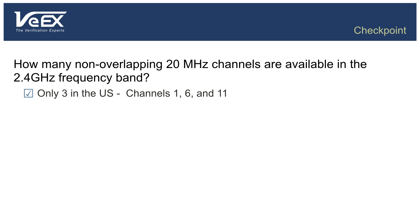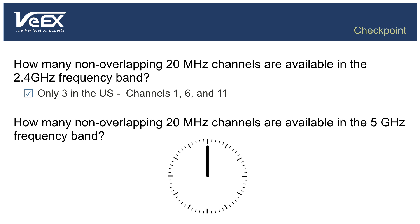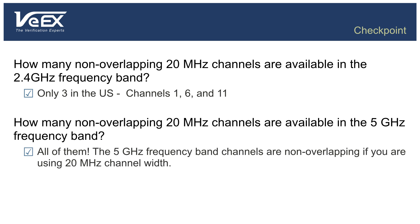How many non-overlapping 20 MHz channels are available in the 5 GHz frequency band? All the 5 GHz channels are non-overlapping because they're designed to be 20 MHz wide. But if you start using 40, 80, or 160 MHz channel bonding to increase your data rate, you may have to start worrying about overlapping. If you want to be a good neighbor, make sure to set your access point to channels 1, 6, or 11 in the 2.4 GHz band, or move on up to the 5 GHz frequency band if you want to avoid interference.